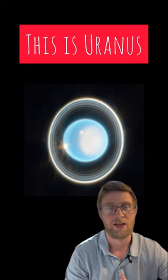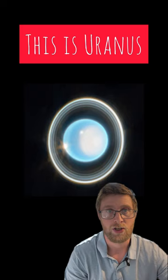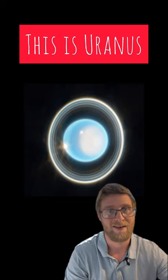This first glimpse by the James Webb Space Telescope at this ice giant highlights the bright atmospheric features as well as 11 of the planet's 13 rings. Only Voyager 2 and Keck have imaged this planet's faintest rings before and never as clearly as this.